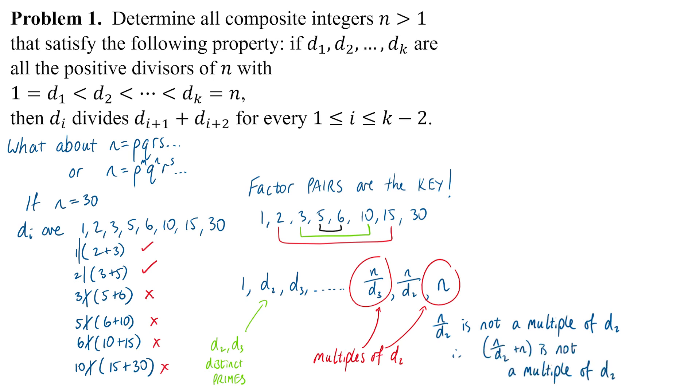That means the third largest prime n over D₃ cannot divide into the sum of the two largest. There's a contradiction. And that contradiction would apply for most composite numbers.